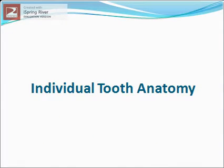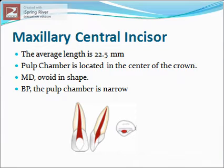Next, we will talk about the individual tooth anatomy, going through the pulp anatomy of each tooth with clinical considerations from the endodontic point of view. Maxillary central incisor: the average length is 22.5 mm. The pulp chamber is located in the center of the crown with equal distance from the dentinal walls.